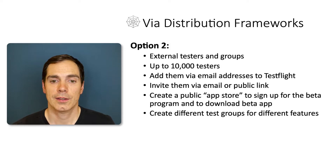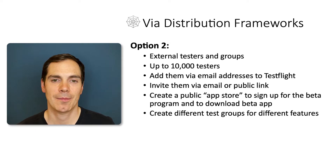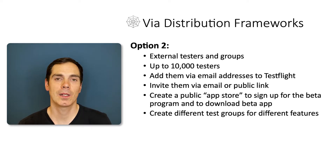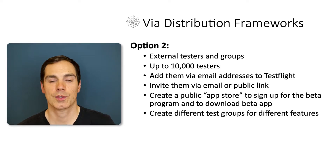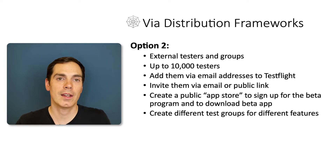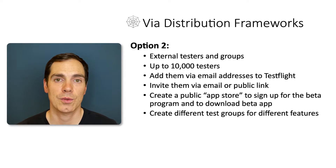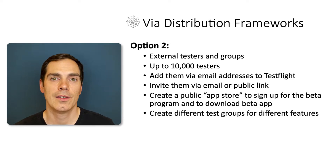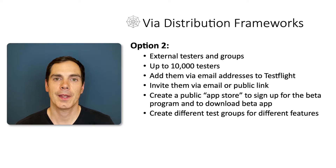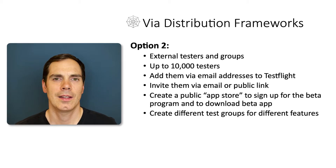Option two is external testers. You can set up up to 10,000 testers, but you still have to add them via email addresses in TestFlight, which isn't ideal. A better approach is to create a public app store — a simple web interface or landing page listing apps distributed via TestFlight or other tools like App Center. You can advertise this page so people can sign up to become beta testers, which is a much nicer opt-in experience than email invites that end up in spam.